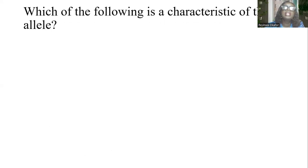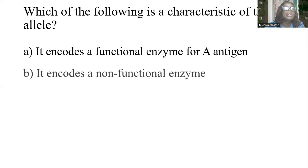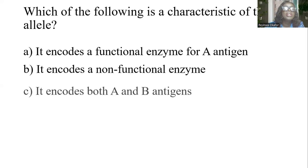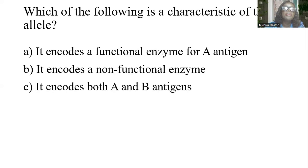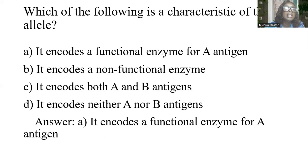Which of the following is a characteristic of the A allele? A) It encodes a functional enzyme for A antigens. B) It encodes a non-functional enzyme. C) It encodes both A and B antigens. D) It encodes neither A nor B antigens. The answer is A: it encodes a functional enzyme for A antigens.